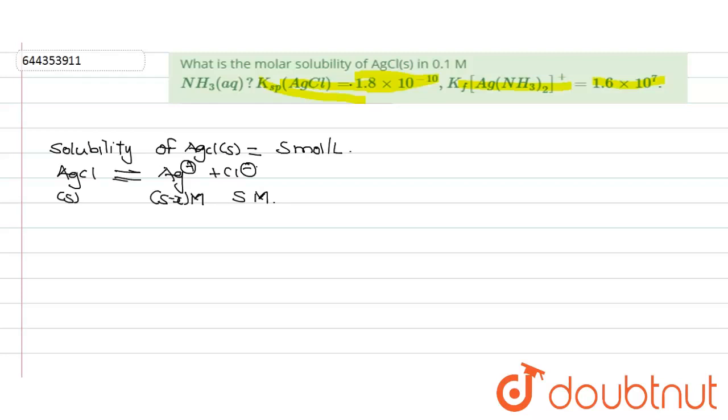Ag+ is reacting with ammonia, it is reacting with two molecules of ammonia and it will give rise to Ag(NH3)2+.